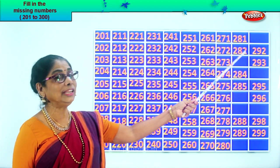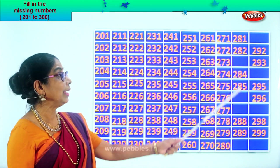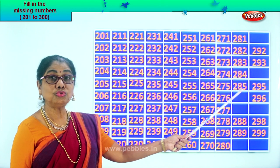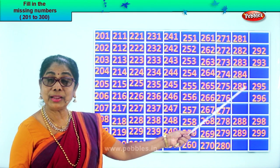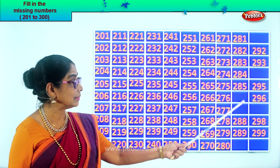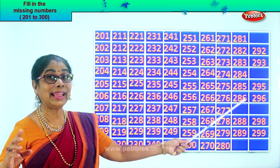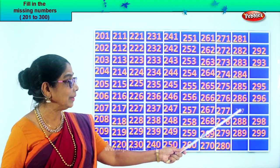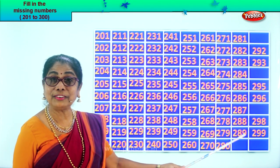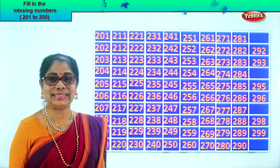Next: two hundred and eighty-one, two hundred and eighty-two. After eighty-two — eighty-three. Two hundred and eighty-three. Two hundred and eighty-four. Two hundred and eighty-five. After eighty-five — eighty-six. Two hundred and eighty-six. After eighty-six — eighty-seven. Two hundred and eighty-seven. Two hundred and eighty-eight. Two hundred and eighty-nine. After eighty-nine — ninety. Good.